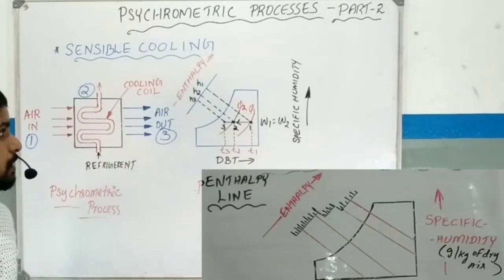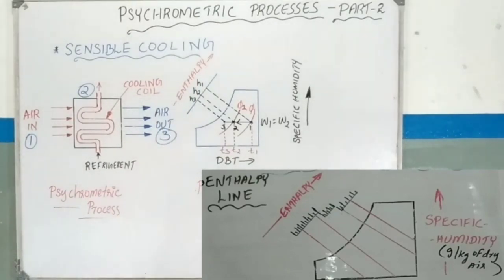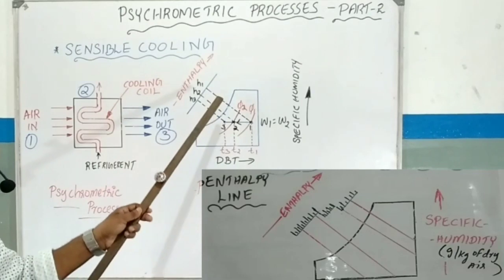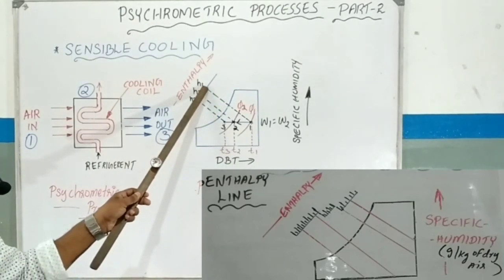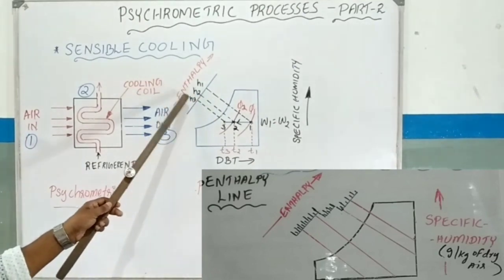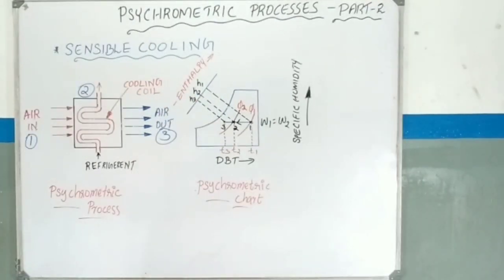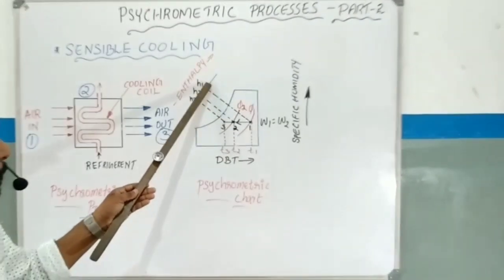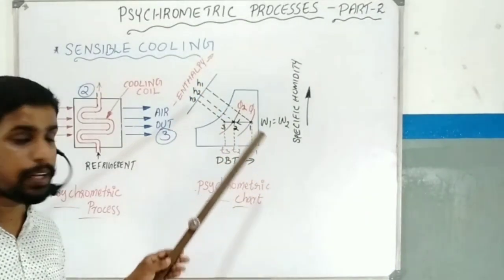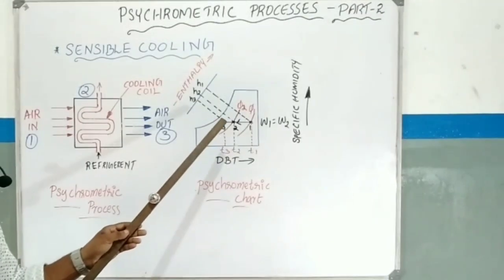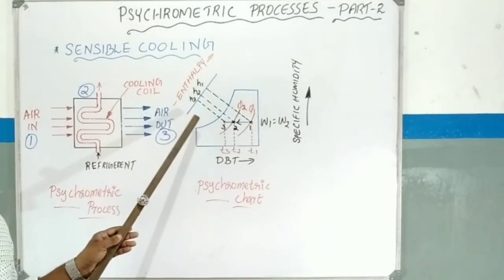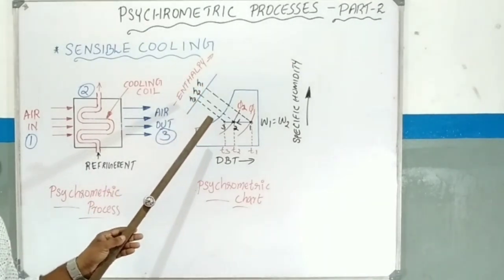Looking at the enthalpy values: H1 is at point 1, point 2 is here, and point 3 is here. The enthalpy decreases as we move from point 1 to point 3. We can see that heat energy is removed during this process.